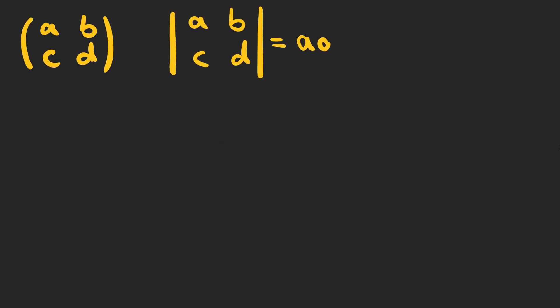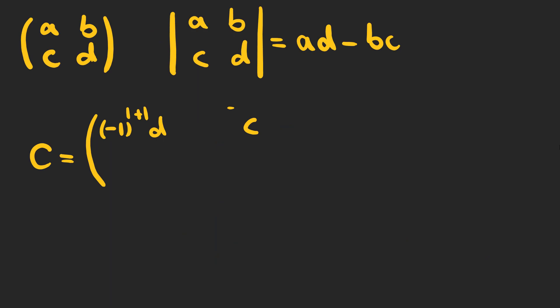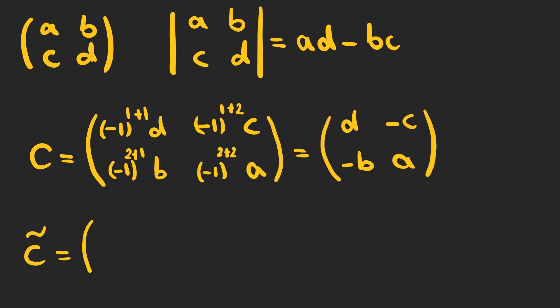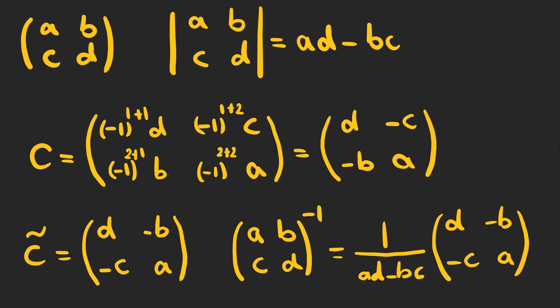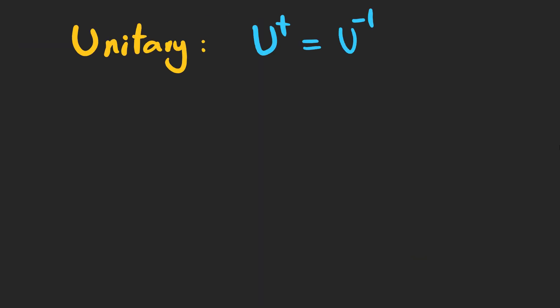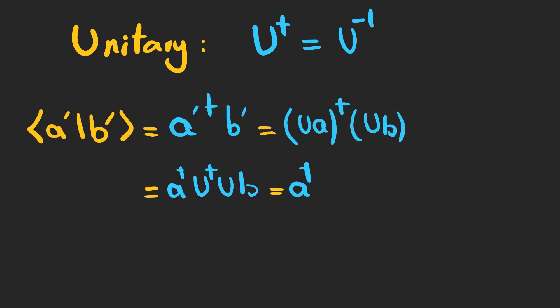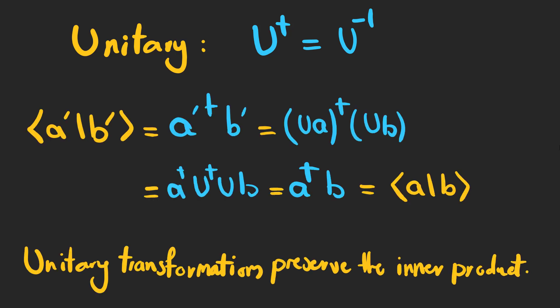To find the inverse of a 2×2 matrix, first calculate the determinant; if it is non-zero, calculate the cofactor matrix, take its transpose, and you have the inverse. Finally, a matrix is called unitary if its Hermitian conjugate equals its inverse. As you can see, unitary transformations preserve the inner product.